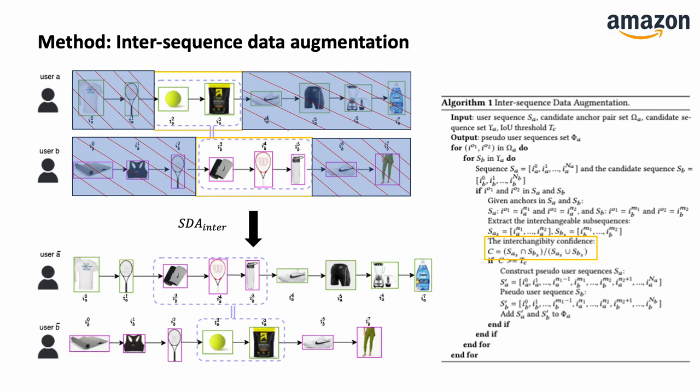By exchanging the sub-sequences, we obtain two pseudo-sequences. In the new pseudo-sequences, customers interact with new items that were in another sequence, so the data density is increased.